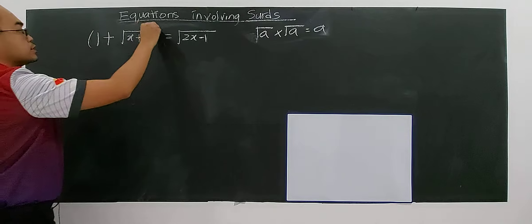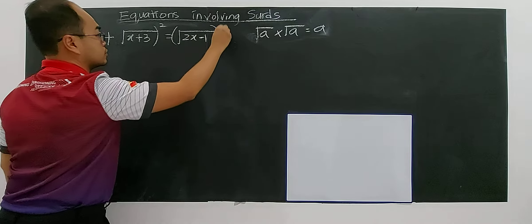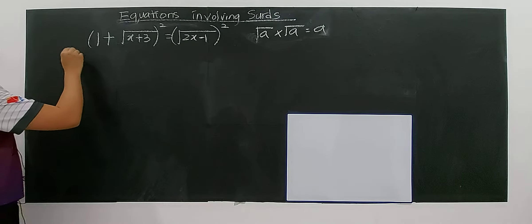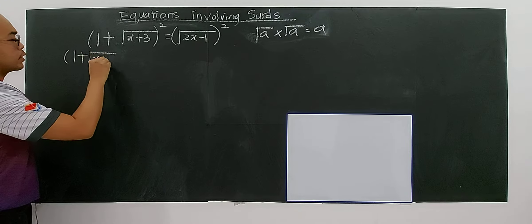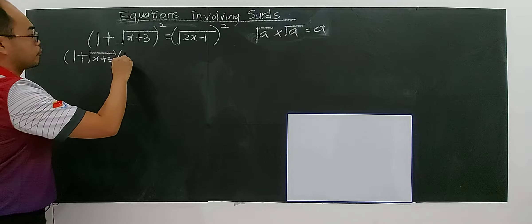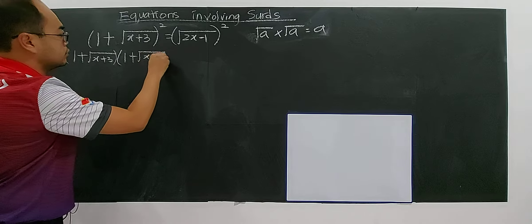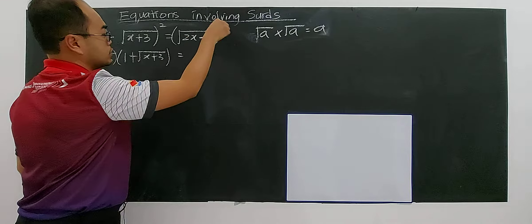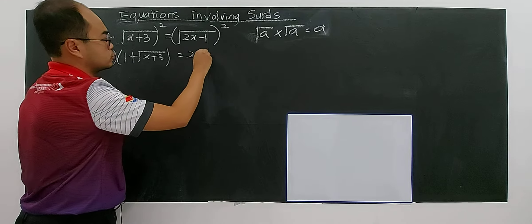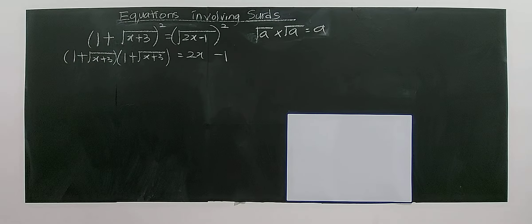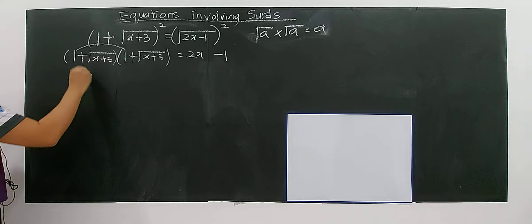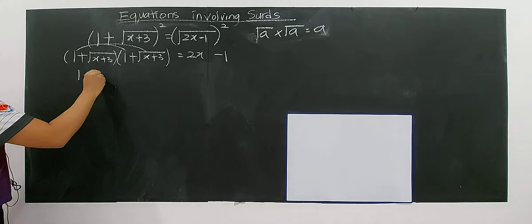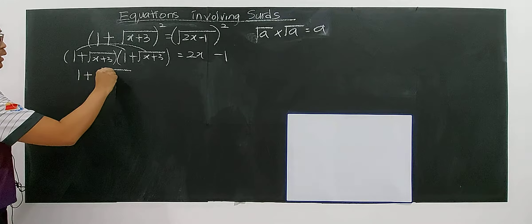I'm going to square both sides. When you square the left side, which is 1 plus square root of x plus 3, and the right side has only one single surd — square root of 2x minus 1 — you need to expand the left side.